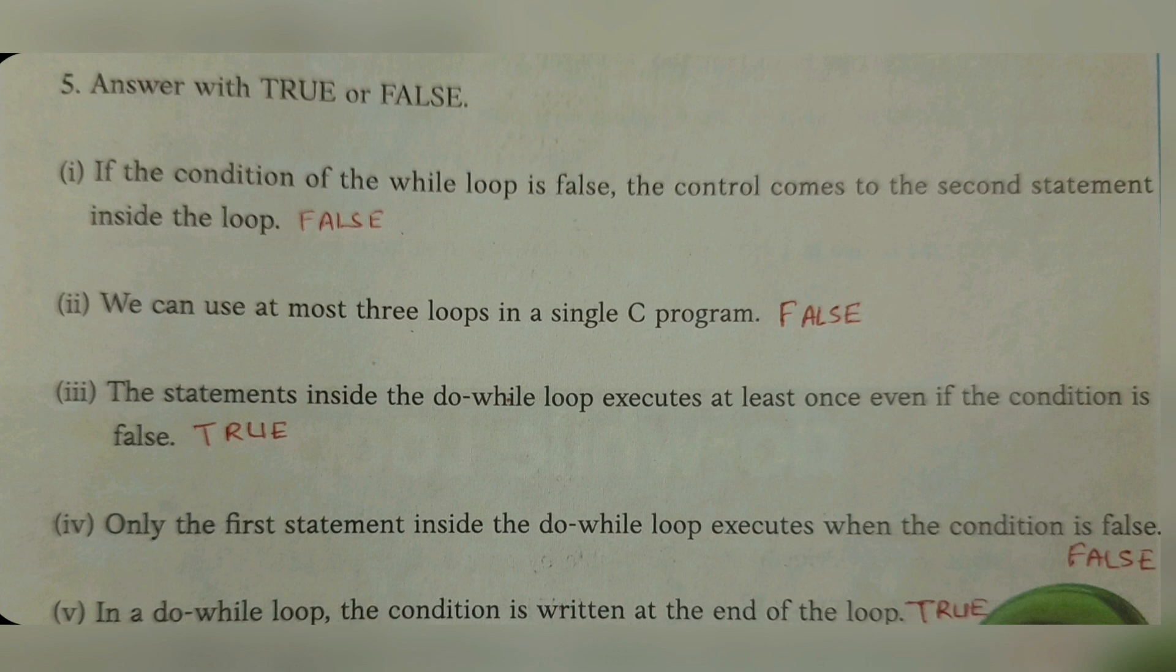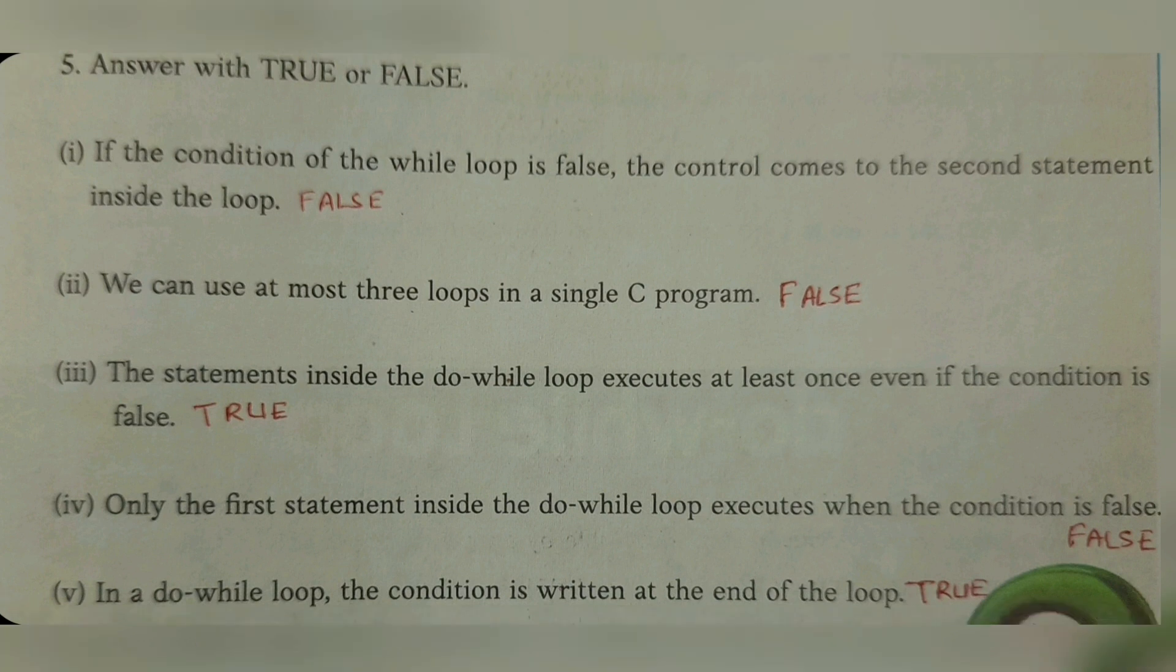Number four: only the first statement inside do-while loop executes when the condition is false. It is false—all the statements will be executed, then it will exit from the loop. Number five: in a do-while loop, the condition is written at the end of the loop. It is true.